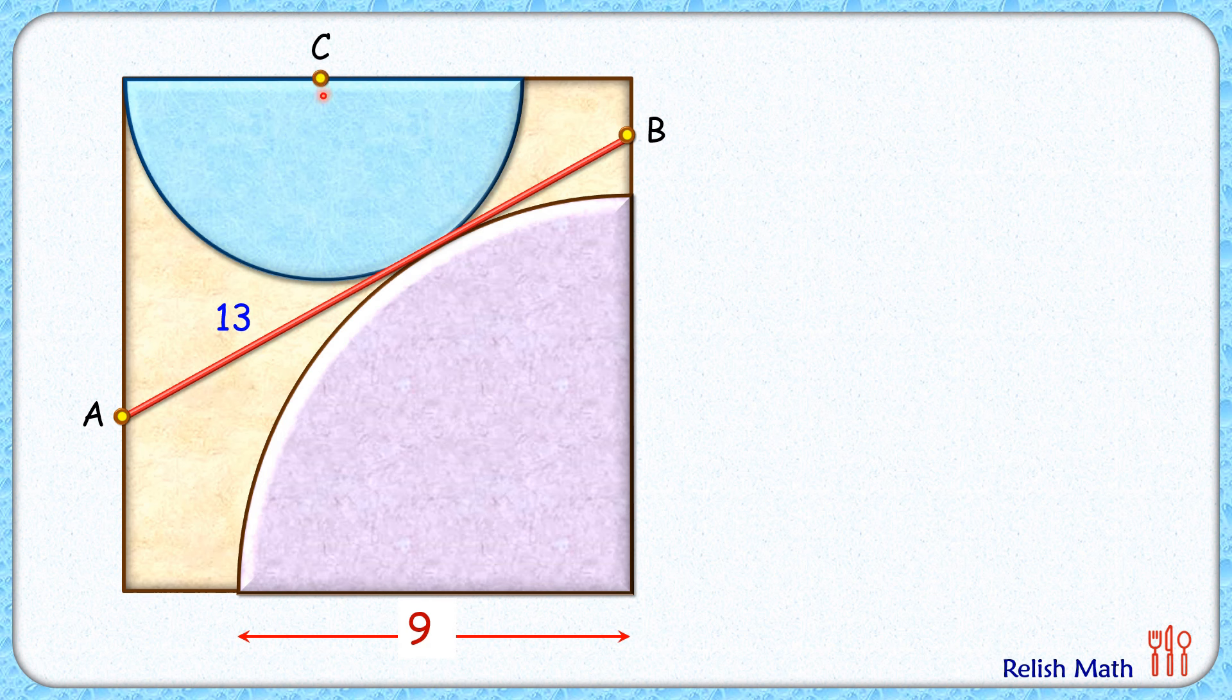We know by theorem that the centers of the circle and the point at which they are touching are collinear, so drawing a line connecting C, E, D.